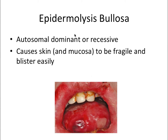Next we have epidermolysis bullosa. This one causes skin and mucosa to be super fragile and blister easily. The clinical presentation almost looks like erythema multiforme, but it's going to involve more of the skin with blistering all over the place.